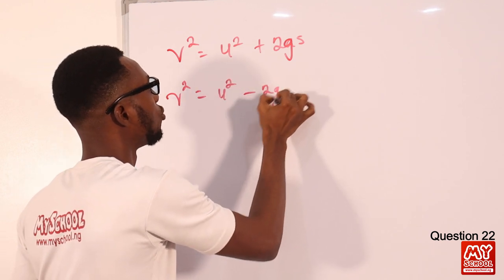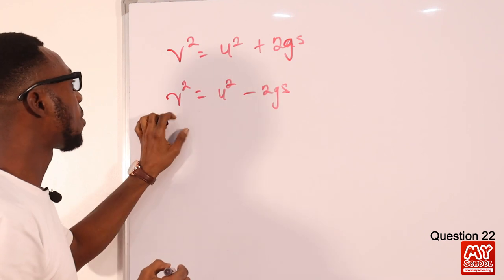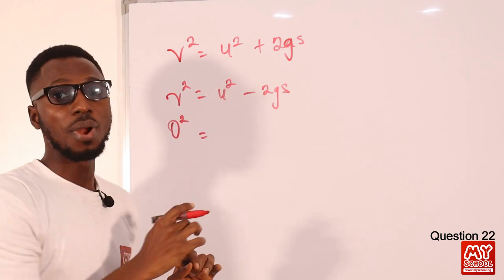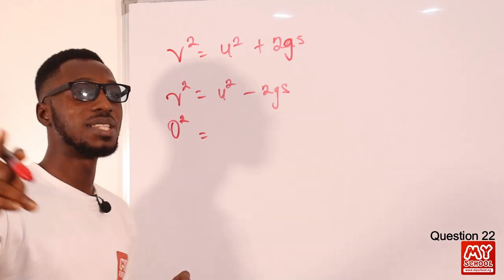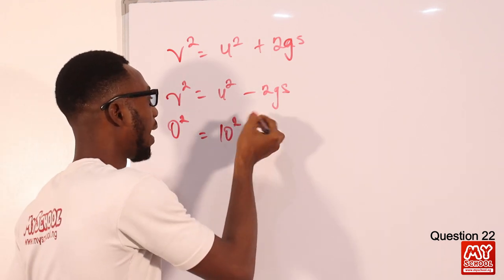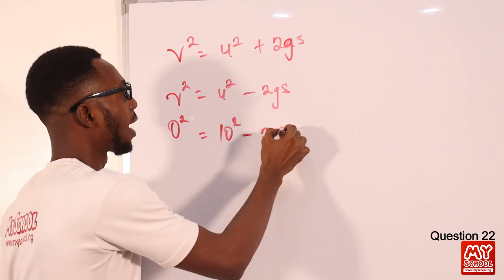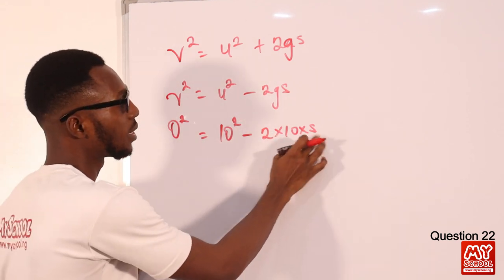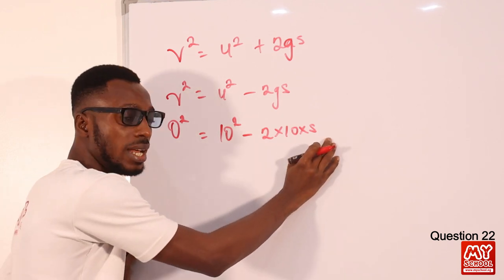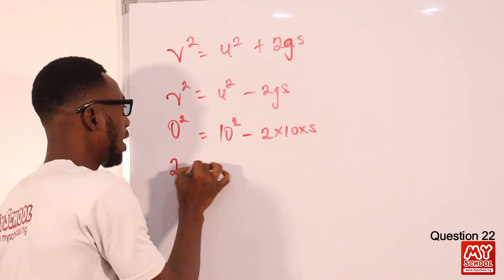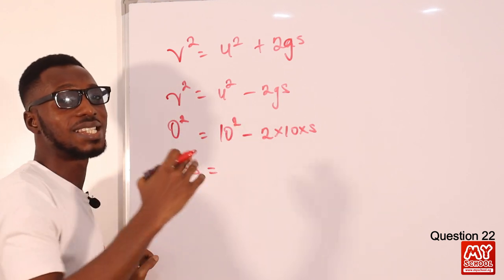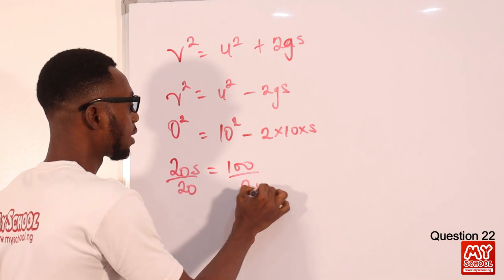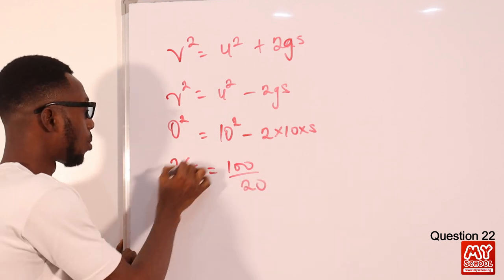At maximum height v = 0, so 0 = 10² − 2(10)s. That gives 20s = 100, so s = 5 meters. The ball rises 5 meters above the tower top.